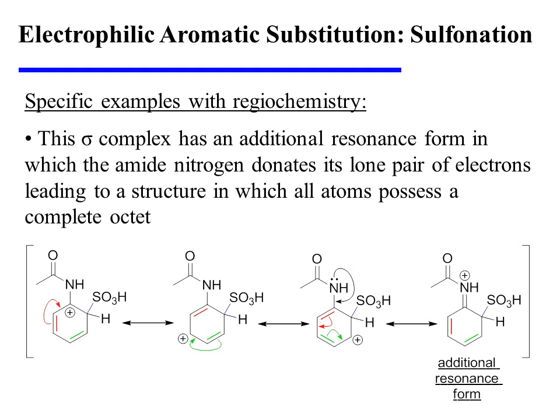This allows the plus charge to be delocalized to one new position outside the ring. When the positive charge is delocalized onto the nitrogen, this resonance form is particularly stabilizing because all of the atoms of the sigma complex possess a complete octet in this particular resonance form.